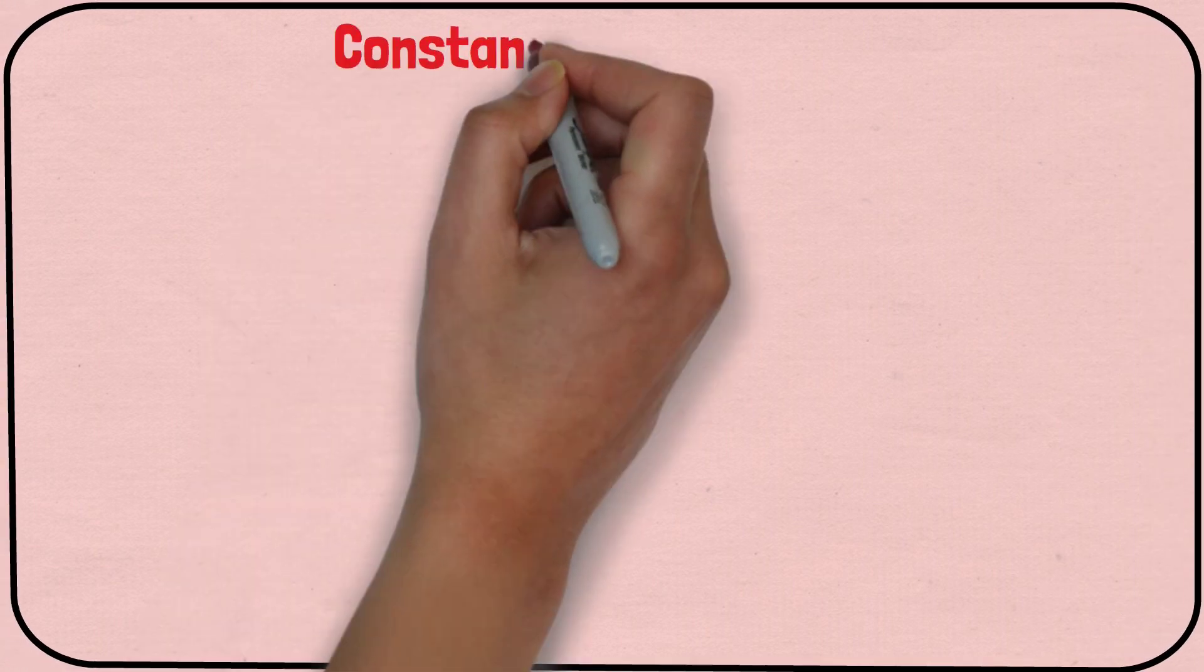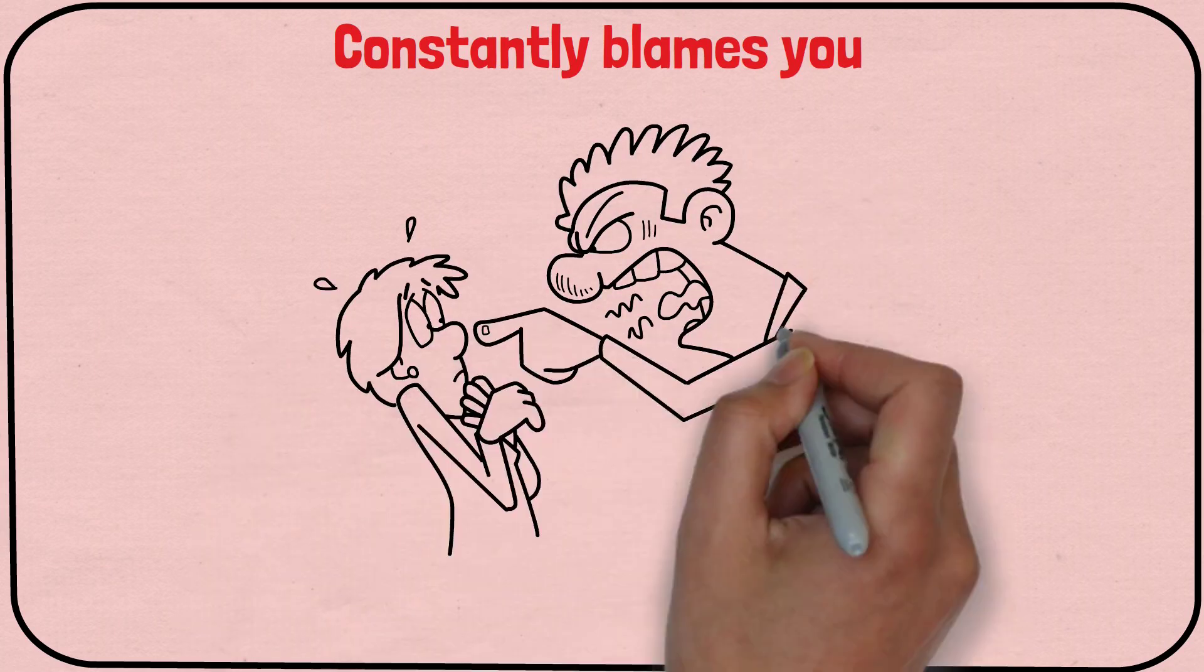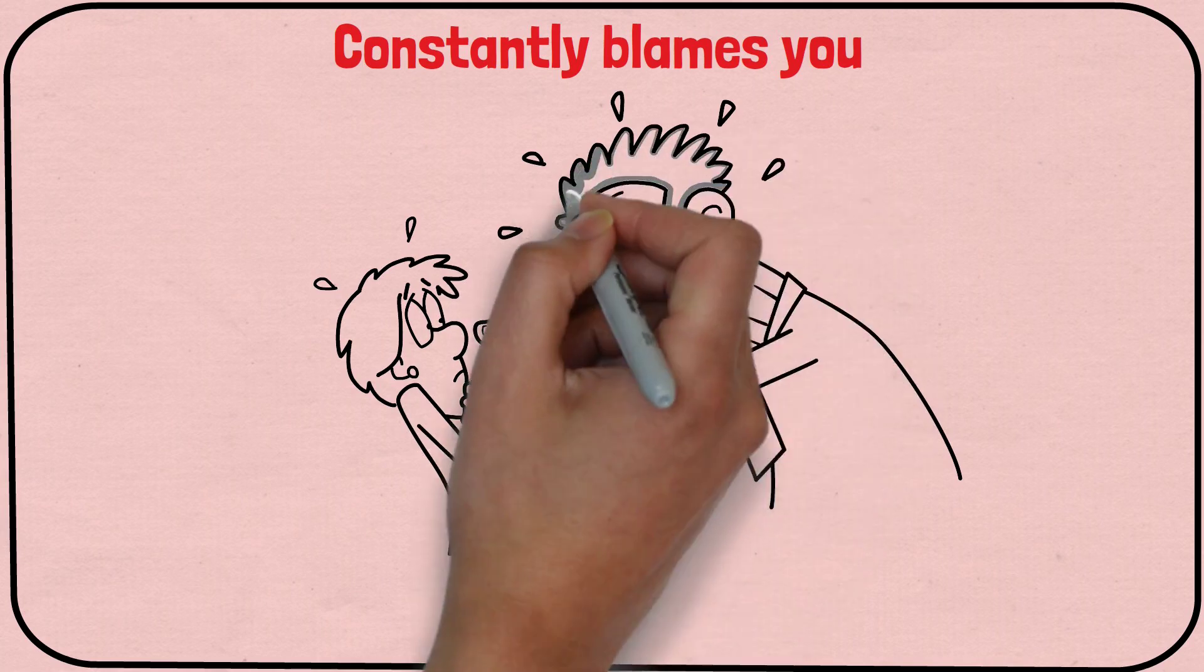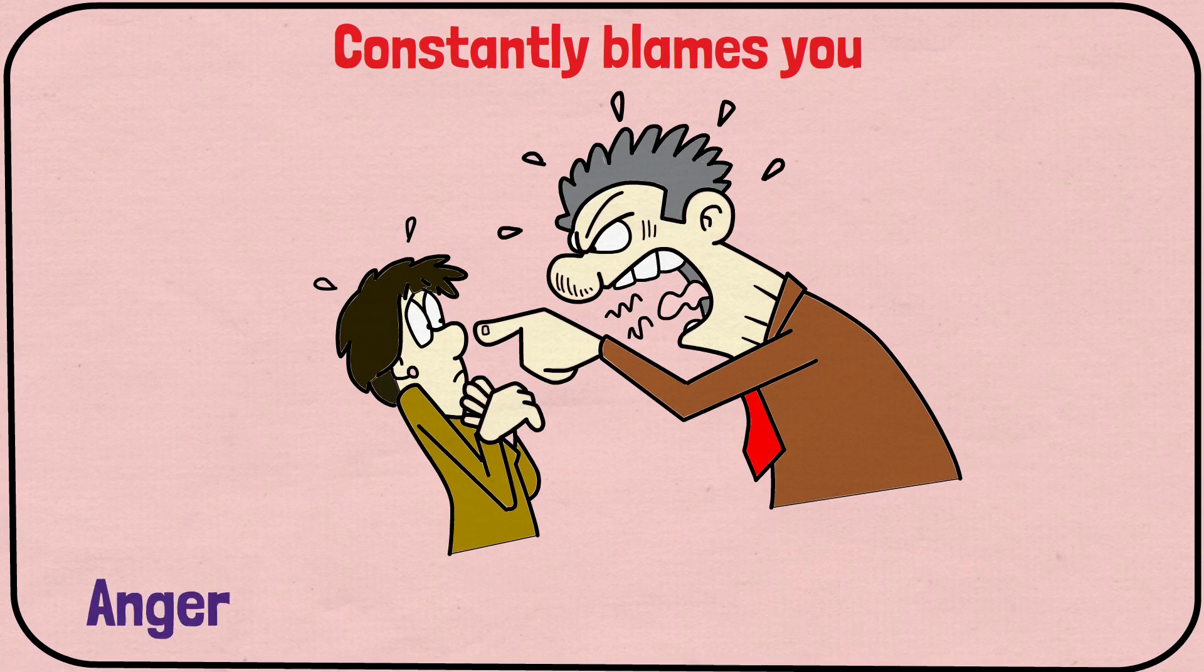Another red flag to look out for is if your partner constantly blames you for their own negative emotions or behavior. Emotionally abusive partners may use their lack of empathy as an excuse to manipulate or control you by making you feel responsible for their anger, sadness, or other negative emotions.